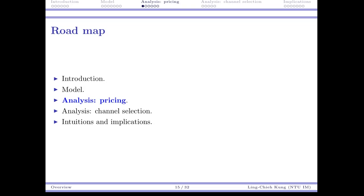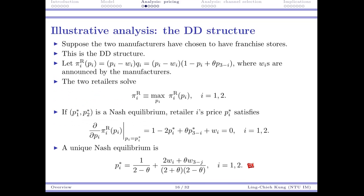Now let's study the pricing game. At the very beginning, the two players make their channel selection decision. After that, they observe the channel structure — DD, II, ID, or DI — and play the pricing game. Here I will only focus on the DD structure, because this is the most complicated one. If you know how to solve this, the other three should have no difficulty.